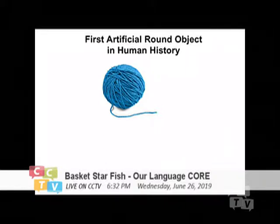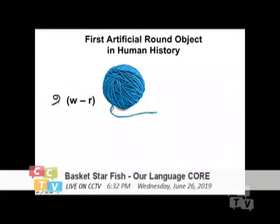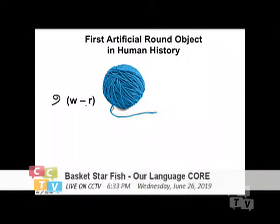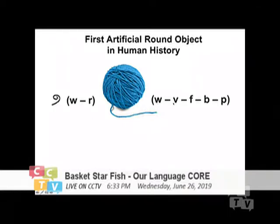Last week I talked about the first artificial round object in human history, which is a ball of yarn. The consonants involved are mainly a few that you can see here. This is an Egyptian hieroglyph which has the W sound. Because I travel from place to place and hear all these sounds shifting, the W is very easily mutated — that's why you have 'world' and 'wrong.' So W can go from 'wa' to 'ra,' and the other way from 'wa' to 'va' to 'fa' to 'ba' to 'pa.'